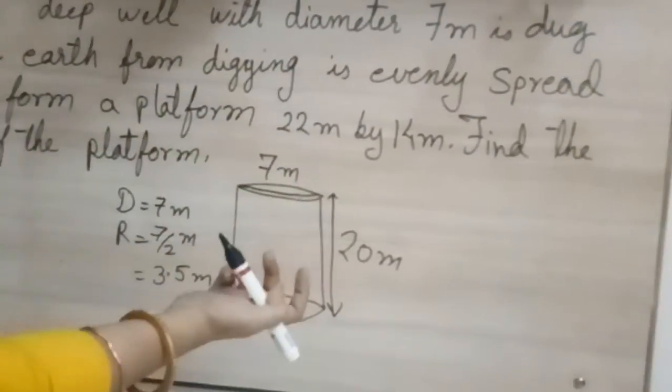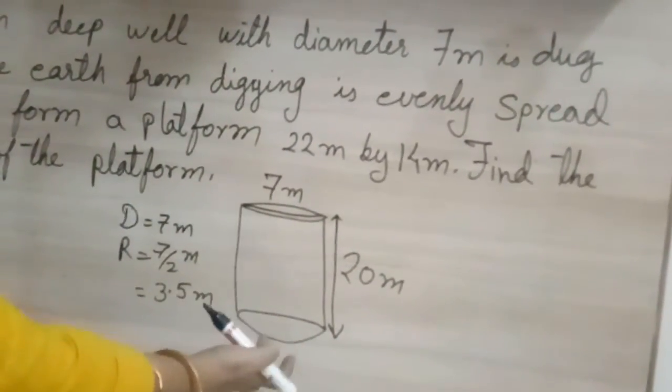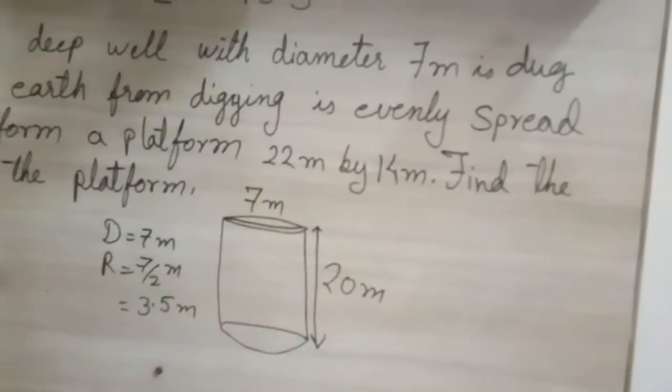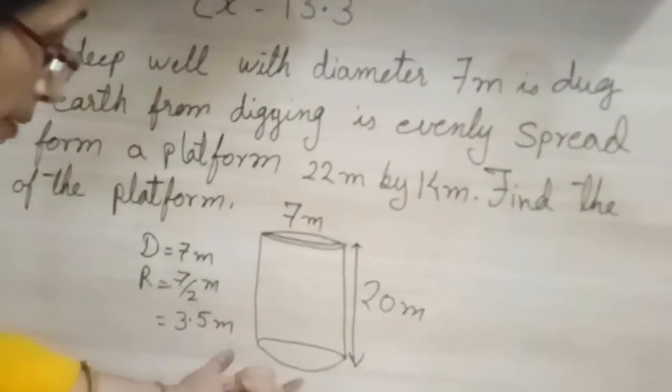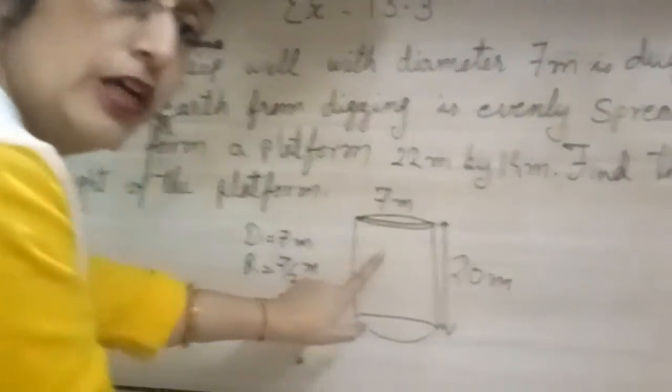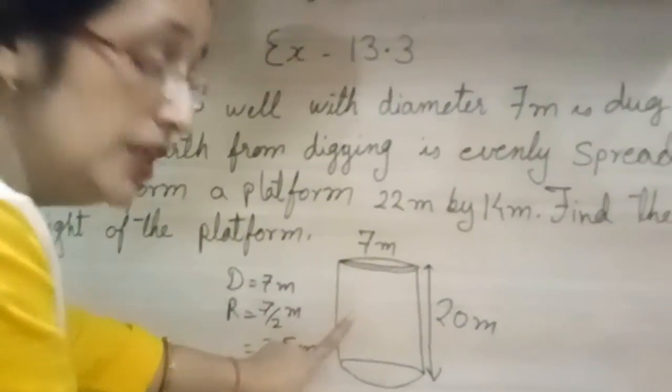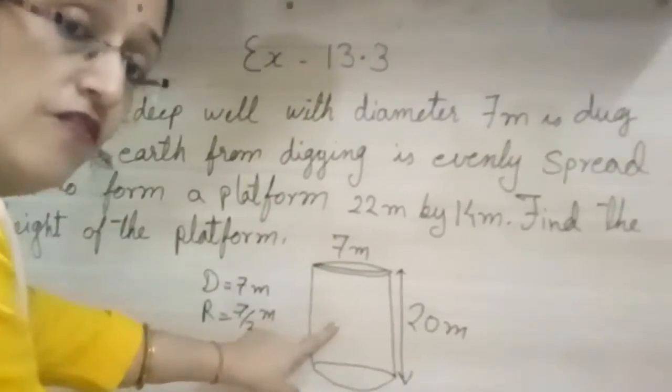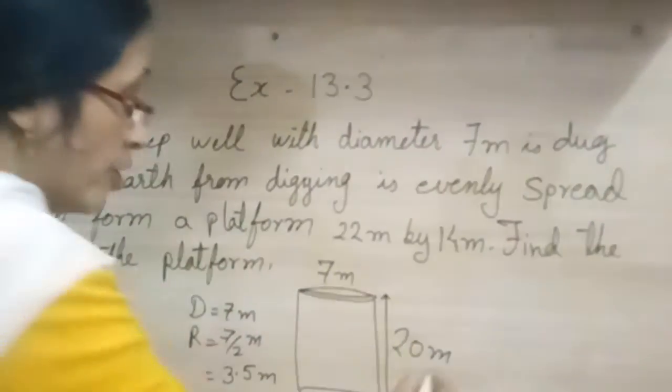And then we dig a well, obviously mud will come out. So when we dig this well, mud came out. So how much mud came out? The mud will be equal to the volume of this well. Mud ka jo volume hoga that will be equal to the volume of well. Jo mud bahar niklega.